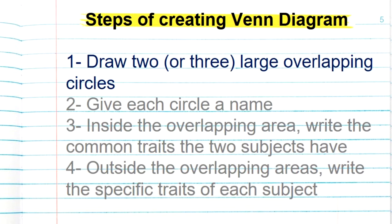To create a Venn diagram, we first draw two usually large overlapping circles. Then we give each circle a name. Inside the overlapping area we write the common traits that two subjects have.